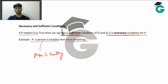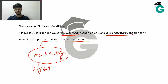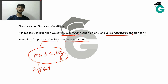The person being healthy definitely means he is breathing — hence this is sufficient for us to know that the person is breathing. Conversely, we say that the person breathing is a necessary condition for the person to be healthy, which is right — if he is not breathing, he will probably die. So it is necessary for him to breathe in order to be healthy.